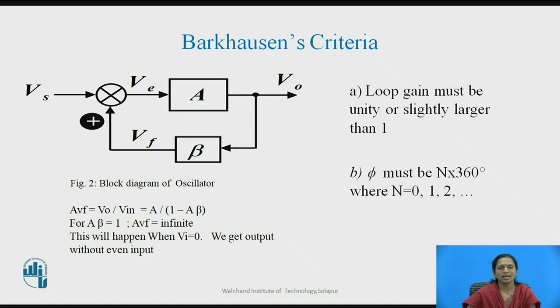We can derive two basic conditions from this criteria, known as Barkhausen's criteria. In 1921, the German physician developed these two conditions. Once you satisfy these conditions, sustained oscillations, that is undamped oscillations, are observed at the output. The first condition is loop gain must be unity or slightly greater than 1.